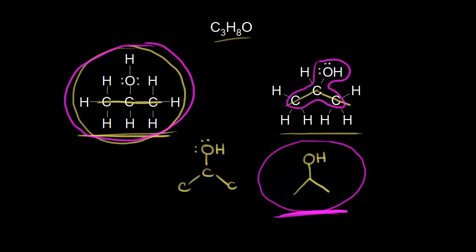So let's focus in on some carbons here. This carbon in red is this carbon — the carbon is still there, we're just not drawing in the C. And let's look at our other carbons: the carbon on the right is the one in magenta, and the carbon on the left is in blue. The carbon in blue is still bonded to three hydrogens — this carbon in blue is still bonded to three hydrogens. We just leave them off in our bond line structure.